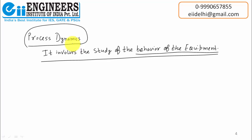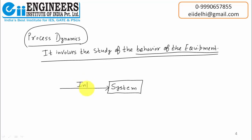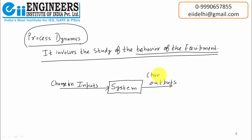Now, how is it done? To know the behavior, we first need to select an object, a process, or a system. Let's say this is a system and I want to know its behavior. Generally, there are some inputs given to the system and there are some defined outputs from the system. If I talk to someone and they give me a defined response, and I want to know the behavior of that person, what I need to do is change my inputs — change my talks.